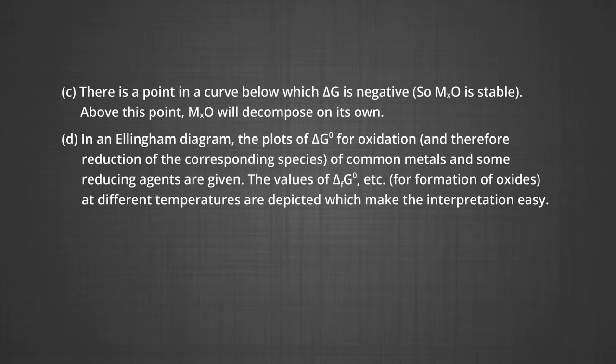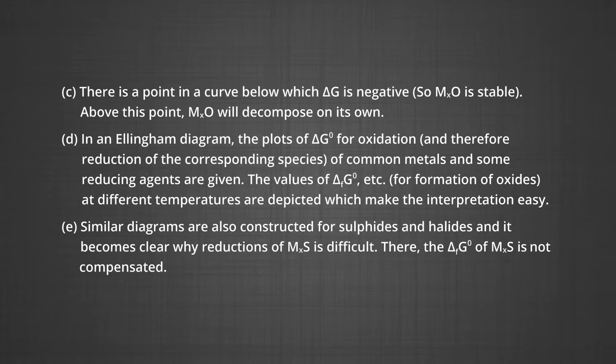In an Ellingham diagram, the plots of ΔG° for oxidation and reduction of the corresponding species of common metals and some reducing agents are given. The value of ΔG° for formation of the oxides at different temperatures are depicted, which makes interpretation easy. Similar diagrams are also constructed for sulphides and halides, and it becomes clear why reduction of metal sulphide is difficult — there the ΔG° of formation of metal sulphide is not compensated. The reducing agent gets oxidized to its oxide, and in turn the metal oxide is reduced. The role of the reducing agent is to provide a ΔG° that is negative and large enough to make the sum of ΔG° of the two reactions — oxidation of the reducing agent and reduction of the metal oxide — negative.